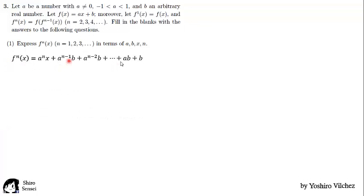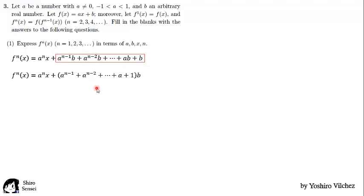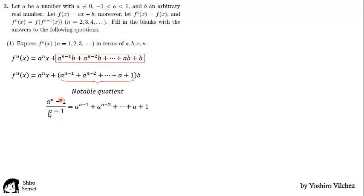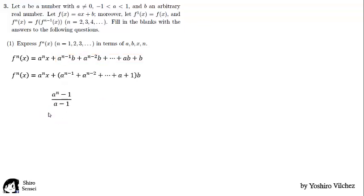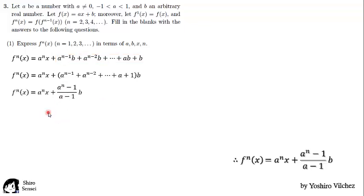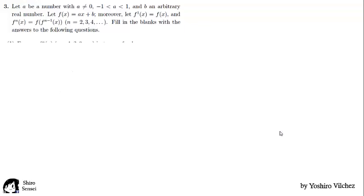Now we simplify fn of x. The independent term has a common factor b, and factoring we get a sum known as a geometric series. Then we replace this in the function and get finally the answer: a to the n times x, plus (a to the n minus 1) over (a minus 1), times b.